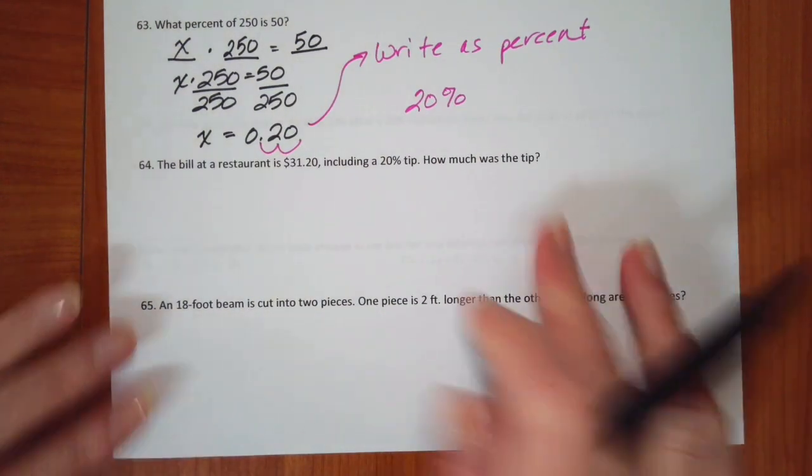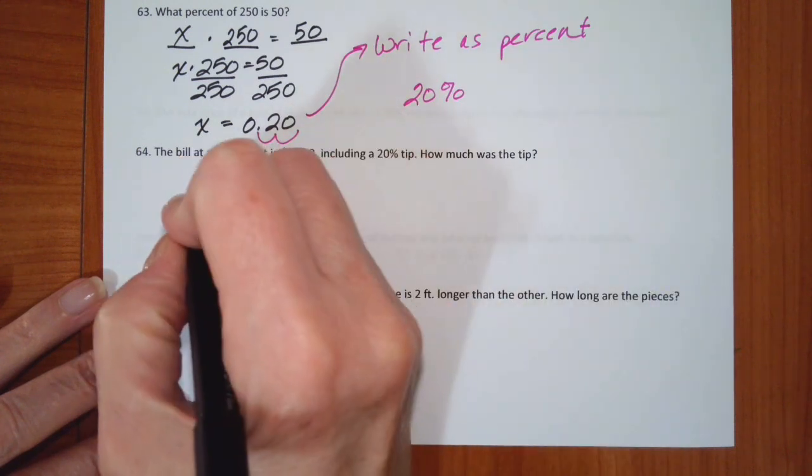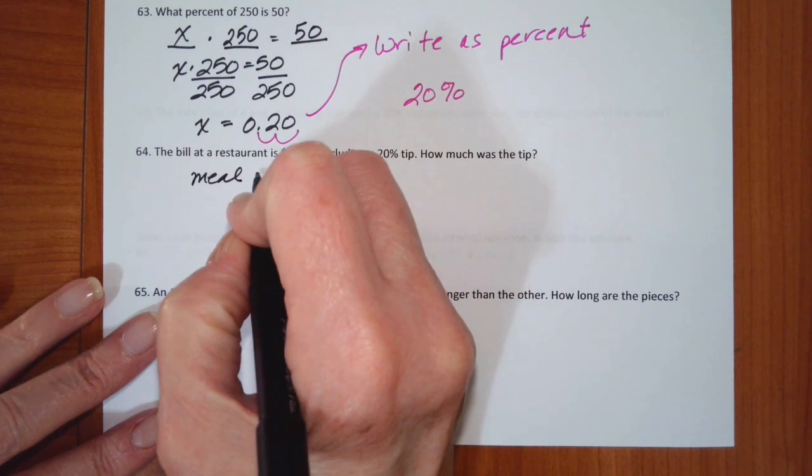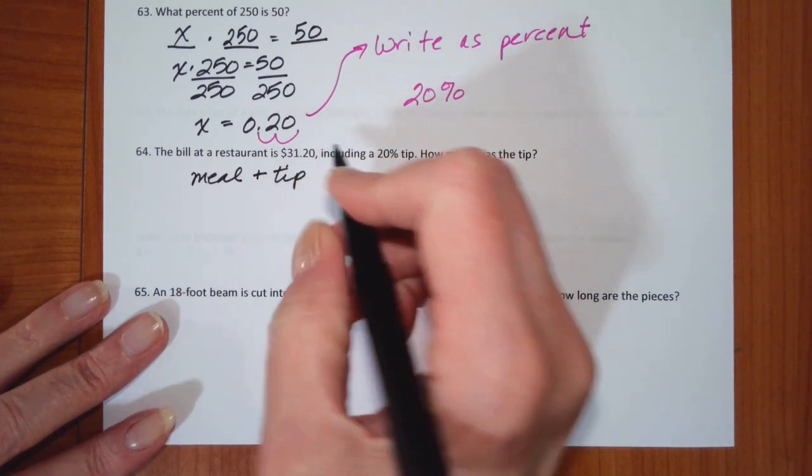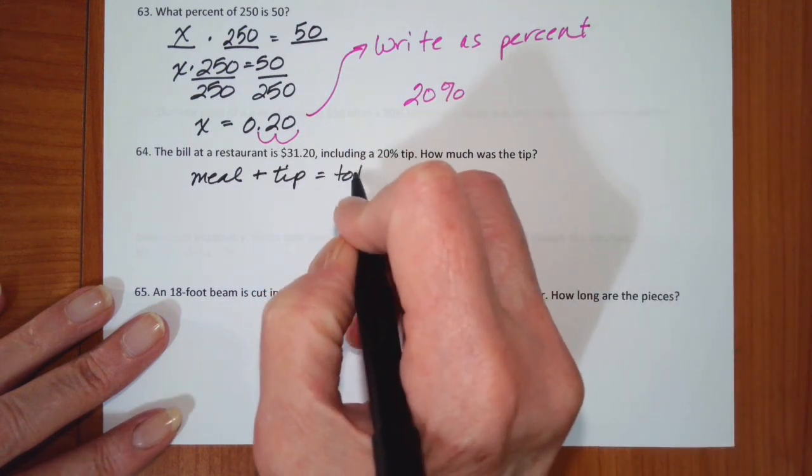So we know here that when we're calculating it, we get the ticket, so we have the meal, and then we add the tip, and that's going to equal the total.